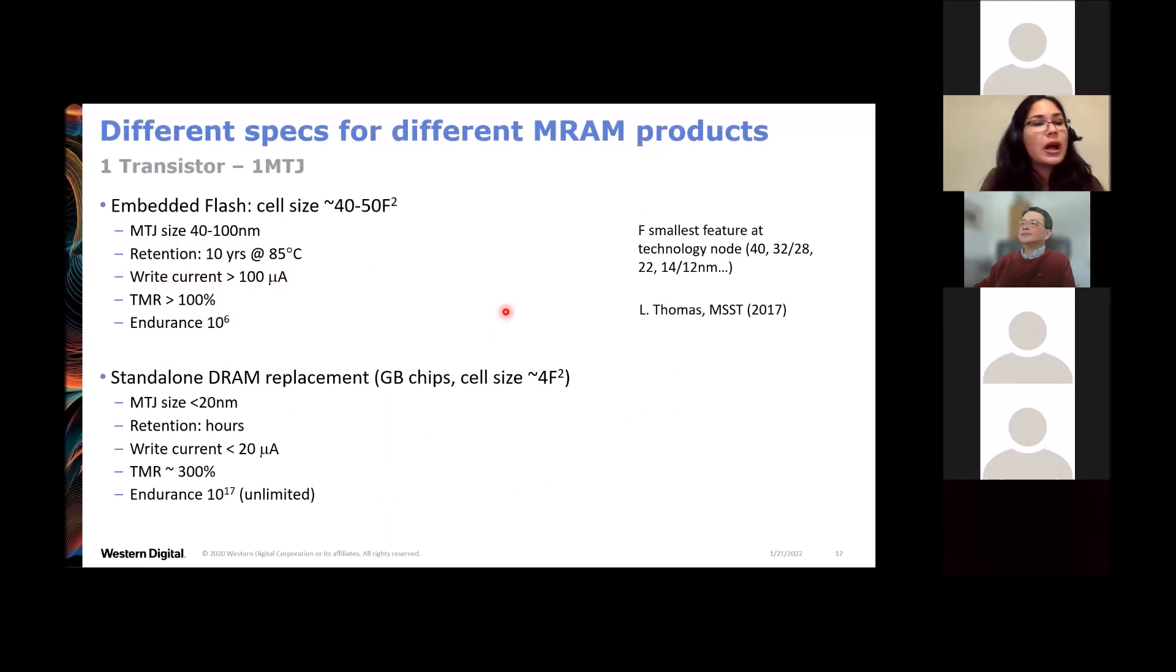And different MRAM products will require different specifications on these parameters. For example, embedded flash products have tunnel junction sizes above 40 nanometers in the domain wall reversal regime, retention of 10 years at elevated operating temperature, write current above 100 microamps, TMR around 100%, endurance a million cycles. But if you want to get to a higher density MRAM, for example, a replacement for DRAM, you're going to need tunnel junctions that are a lot smaller, 20 nanometers or less, write currents also a lot smaller, TMR needs to be high approaching even 300%, and then unlimited endurance 10 to the 17.